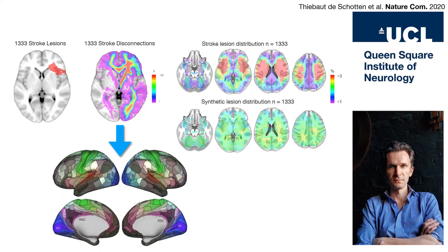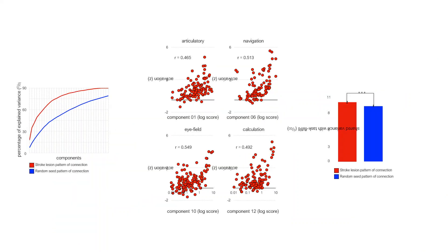The lesions were provided by Parashkev Nachev — thank you, Parashkev. Then those matrices of disconnection — you take the components of your connectivity matrix for all seeds and put them into a principal component analysis with varimax rotation. You try to see how much variance you can explain. With random seeds using one component you explain not much variance; with two, a little more. Carrying on, you reach a cap of about 85% of variance explained with about 30 components.